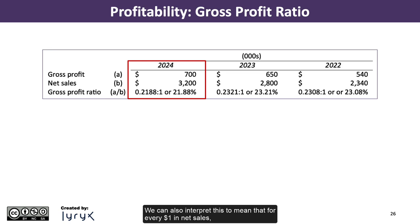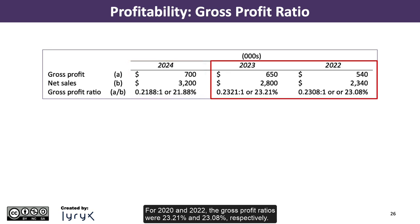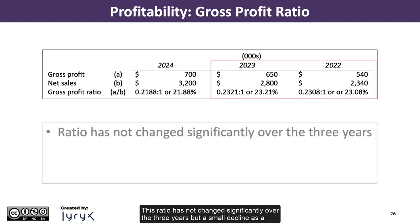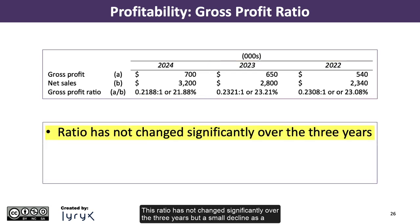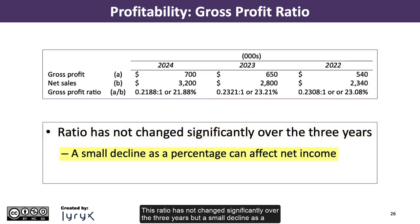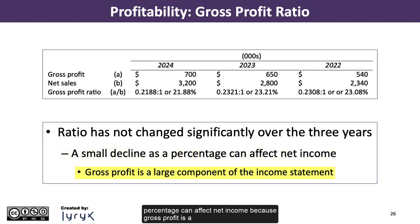We can also interpret this to mean that for every $1 in net sales, Big Dog generates a gross profit of 21.88 cents to cover remaining expenses. For 2023 and 2022, the gross profit ratios were 23.21% and 23.08%, respectively. This ratio has not changed significantly over the three years, but a small decline as a percentage can affect net income, because gross profit is a large component of the income statement.